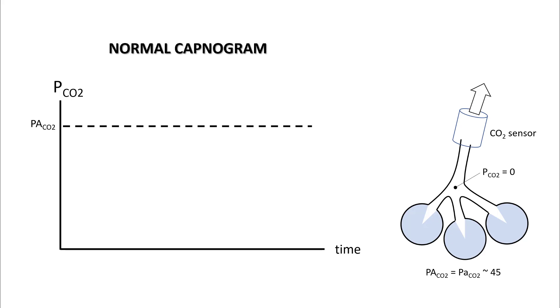On the right side we have three alveoli and a CO2 sensor. As you know, the PCO2 of dead space is zero and alveolar CO2 equals arterial CO2, which is approximately 45 in a normal person. The first phase of capnogram is exhalation. When you exhale, the first thing to come out is the anatomical dead space—that's phase one.